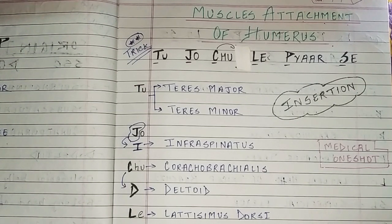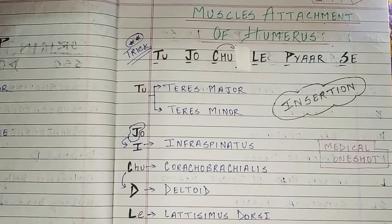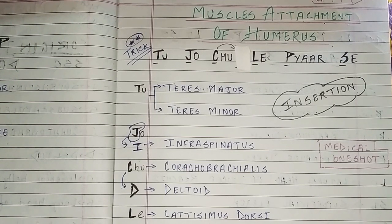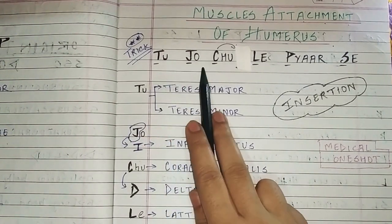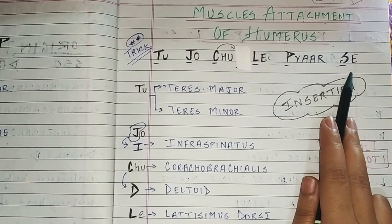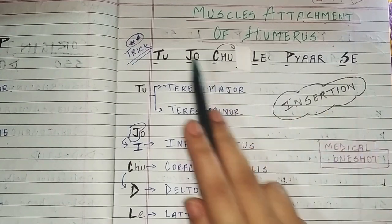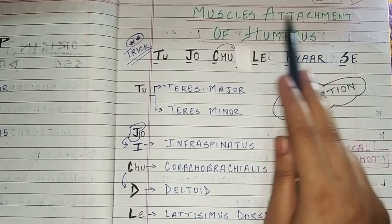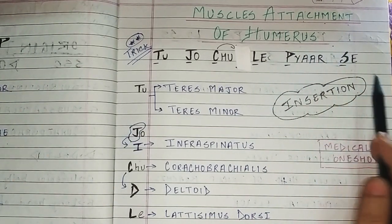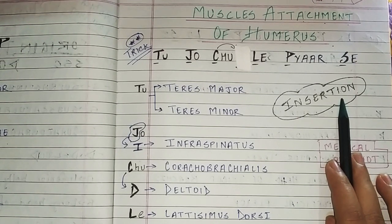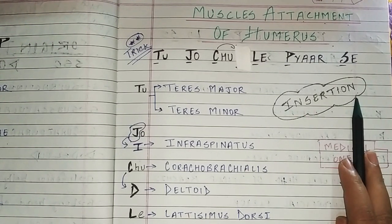Hello everyone and welcome back to my channel, Medical One-Shot. In this video I'll be talking about the muscle attachments of the humerus with all the funny tricks. The trick is that if you love anatomy, anatomy will remember the humerus muscles in return. We will remember the origin and insertion separately — each has a different trick.